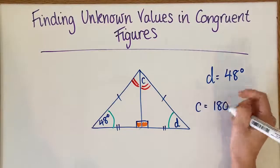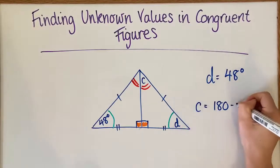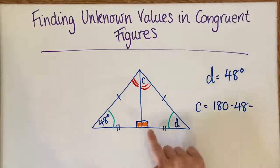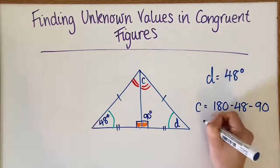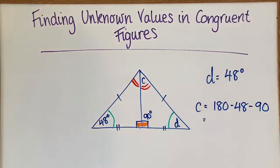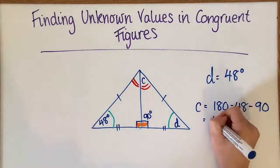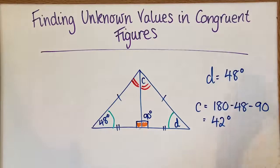So to find C, we're going to go 180, take away 48, take away 90 because we know that this is a right angle and then that's 90 degrees. I can do that on my calculator and that's going to give us 42 degrees.